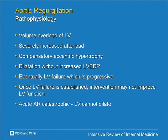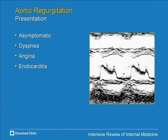The pathophysiology of chronic AR involves volume overload, severely increased afterload, and compensatory eccentric hypertrophy. End-diastolic pressure is preserved until late in the course, then rises rapidly with progressive LV failure. The course is usually very long, but once failure is established — especially if LV function has been depressed more than a year — complete return of LV function becomes less likely. Most patients are asymptomatic initially. It can present with heart failure, angina even with normal coronaries due to the enlarged thick ventricle, or endocarditis.